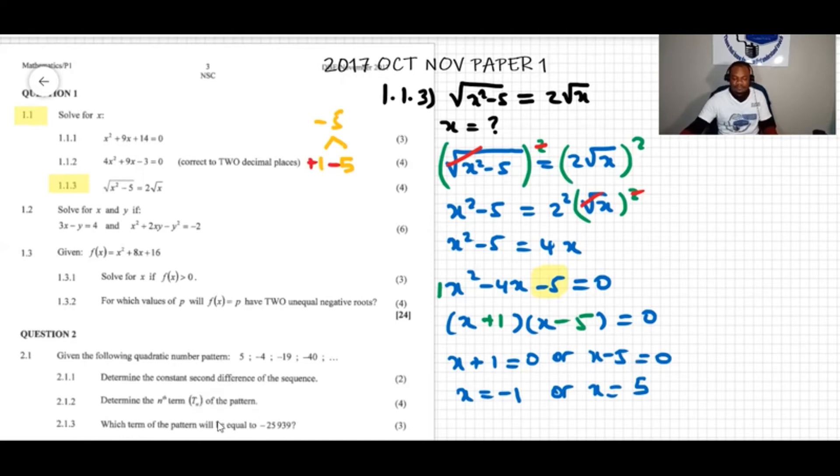Now we're going to check. Let's check. We have here square root of x squared minus 5 equals 2 root x. Now we can see if I substitute negative 1, we will have a square root of... We will check if this is correct.